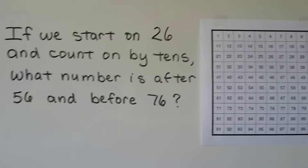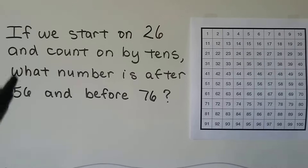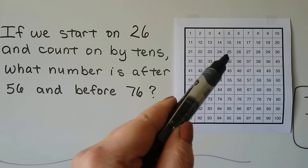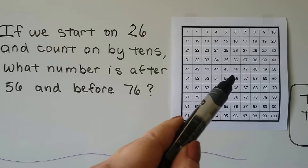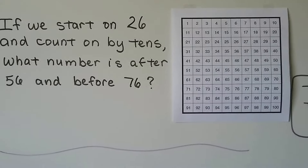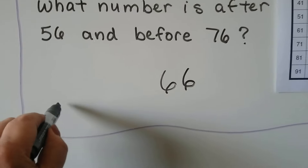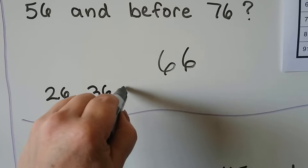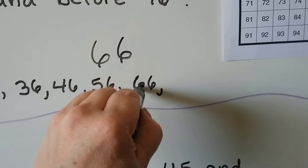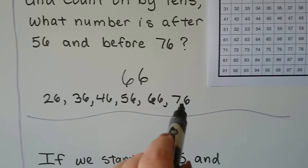If we start on 26 and count on by tens, what number is after 56 and before 76? We find 26 on the chart — here it is. We need a number that is after 56 but before 76. So the number that's after 56 and before 76 would be 66. We have 26, 36, 46, 56, 66. So 66 is the number after 56 and the number before 76.